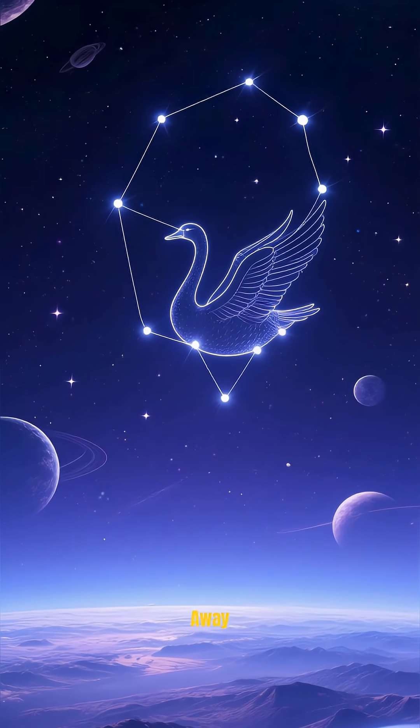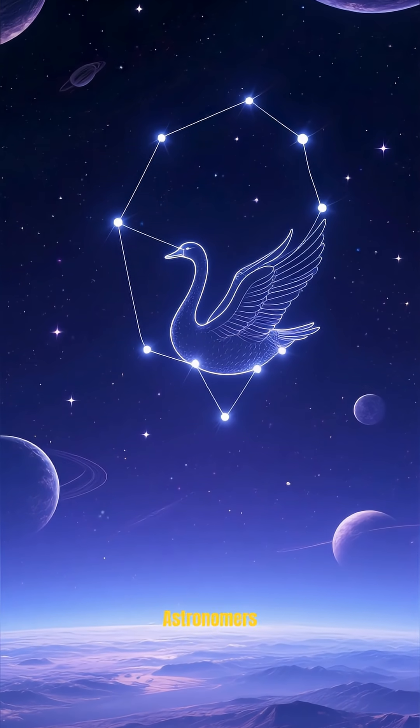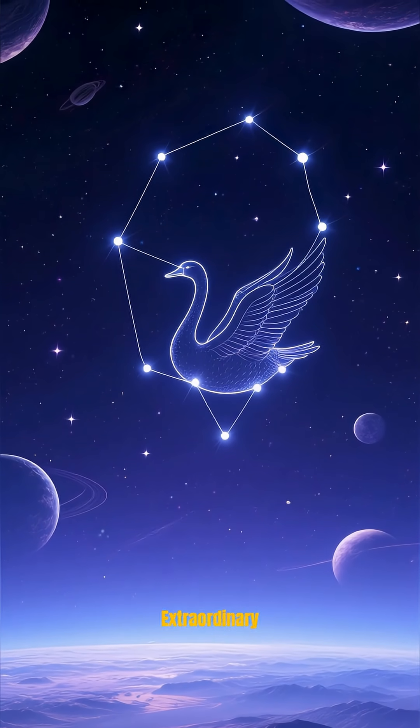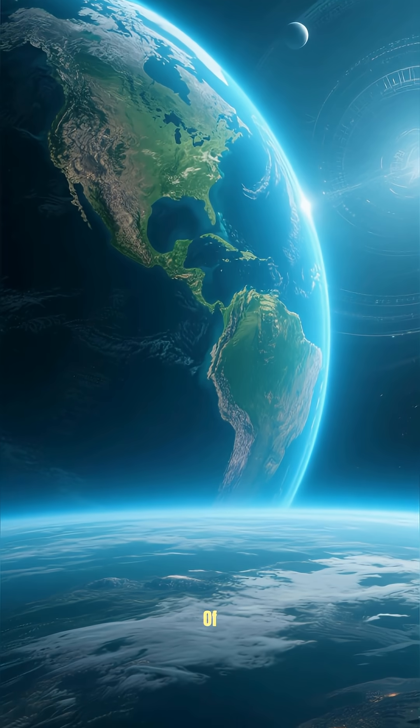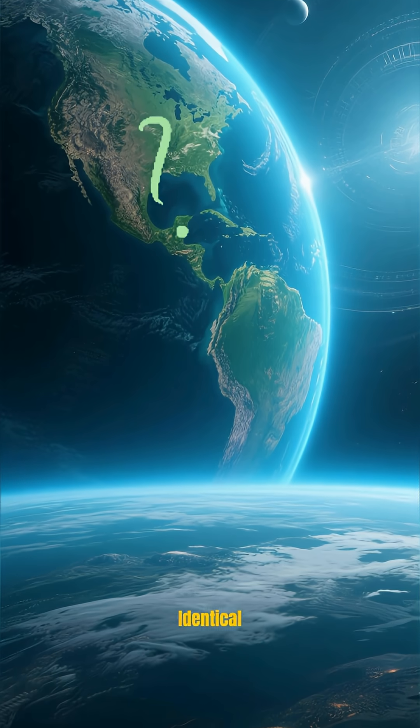More than 500 light years away, in the constellation Cygnus, astronomers found something truly extraordinary. A planet, nestled in the darkness of space, that looks almost identical to our own.